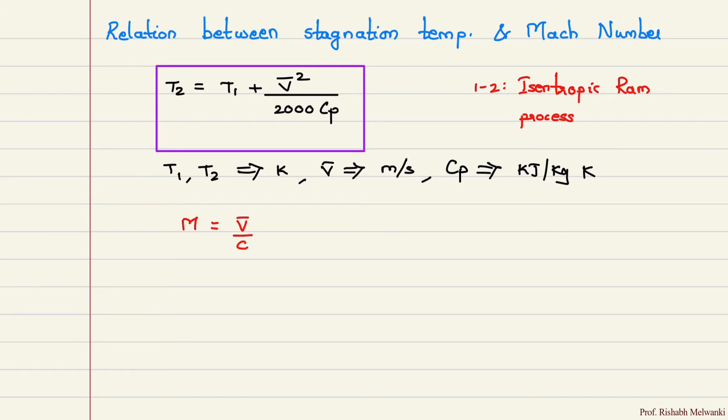So V bar is velocity of aircraft or you can say velocity of air. Now here there are two considerations. If you consider the practical scenario, aircraft is moving in this direction, air is supposed still, so V bar will be velocity of aircraft.